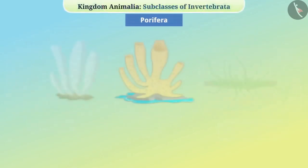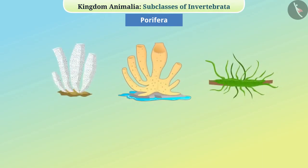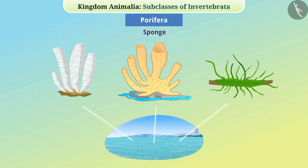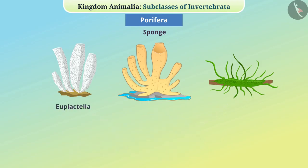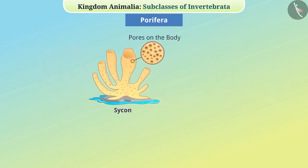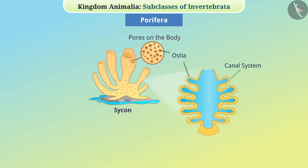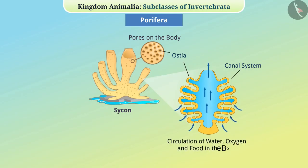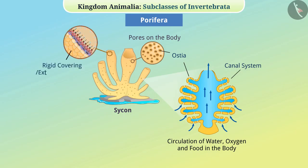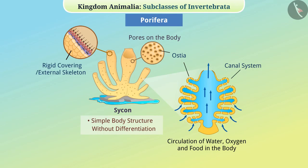Porifera: These are a group of animals with pores, commonly known as sponges. They are found in saline areas such as the sea. Some examples are Euplectella, Spongilla, and Sycon. They are immovable and attached to some base. They have many pores in their entire body called ostia, connected to a canal system through which circulation of water, oxygen, and food takes place. Their body is covered with a rigid covering or external skeleton. Their body structures are simple and do not differentiate into tissues. They can produce offspring through both sexual and asexual reproduction.